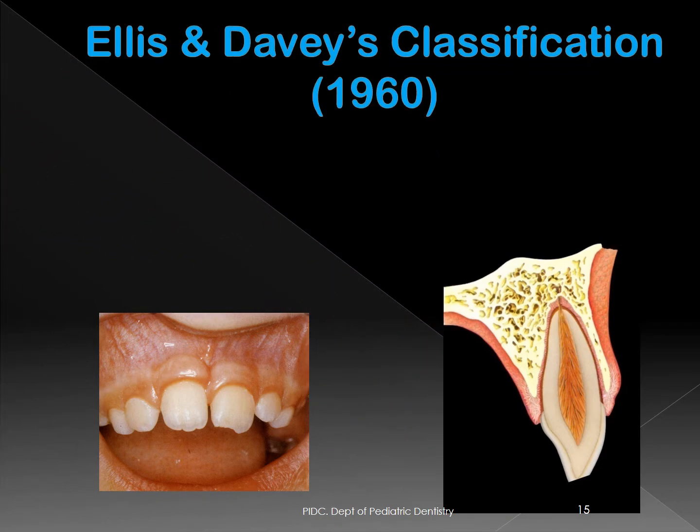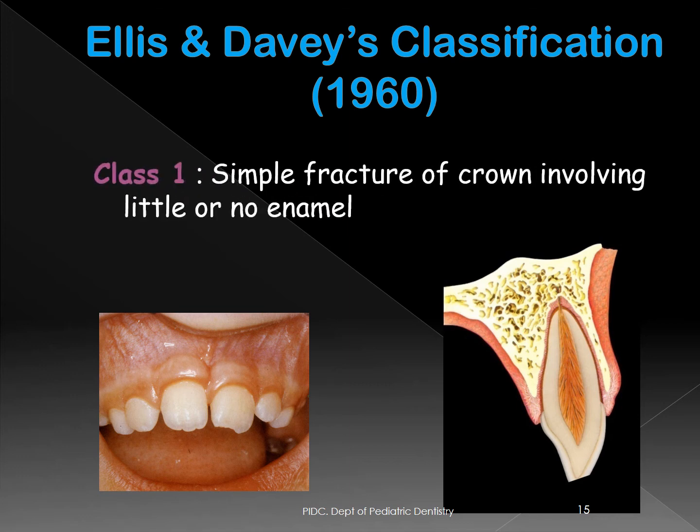One basic and easily understandable classification is Ellis and Davies, given in 1960. It is simple and easy to follow. Classes are characterized from Class I to Class IX. Class I involves simple fractures of the crown with little or no enamel loss.